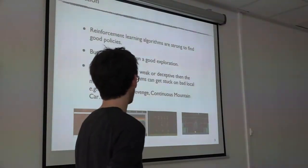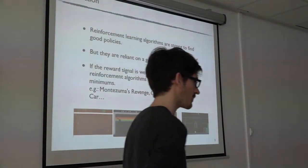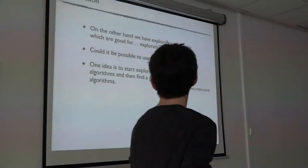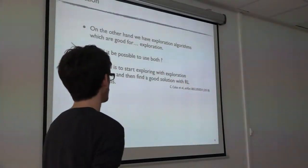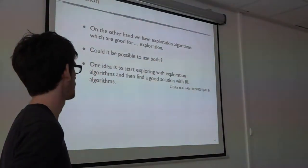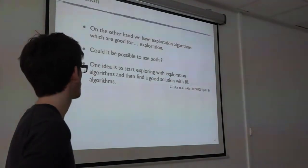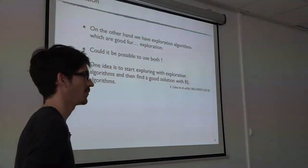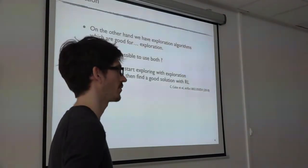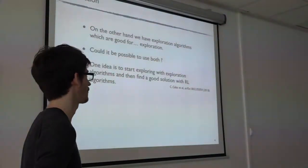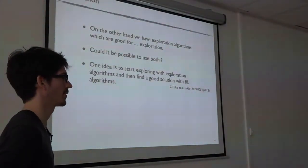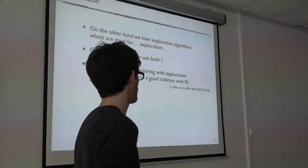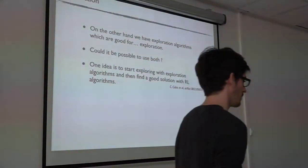Reinforcement learning algorithms are very good at finding good policies, but there is one issue: they are very reliant on good exploration. If the reward signal is weak or deceptive — as in the case of continuous mountain car — you can get stuck in bad local optima, never find the reward, and never solve the problem. On the other hand, we have exploration algorithms which are good for exploration, so it's natural to want to combine the two approaches. One way is to fill the replay buffer using the exploration algorithm, and once you find the first reward, switch to RL and optimize using DDPG or your favorite algorithm.